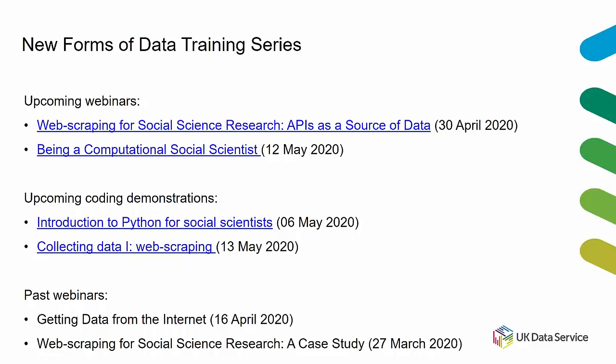Today we're going to look at collecting data from websites. It's the second in a series of web scraping for social science research. This one will focus on web scraping websites. Next week we have a session on online databases, also known as application programming interfaces. We had a previous one on the 27th of March, which was a case study of how web scraping works for a piece of published social science research. It's part of a wider package of training here at the UK Data Service.